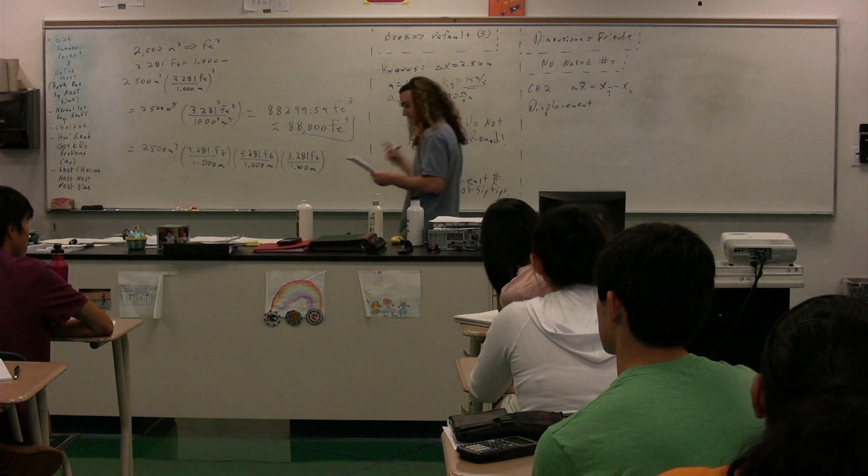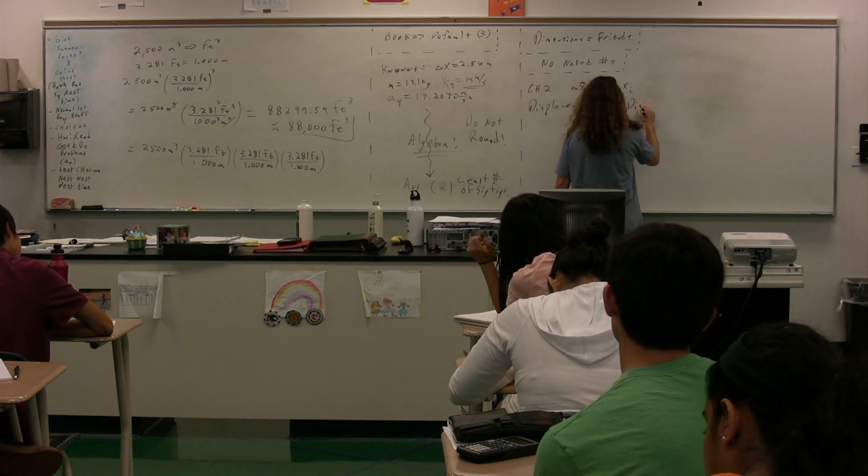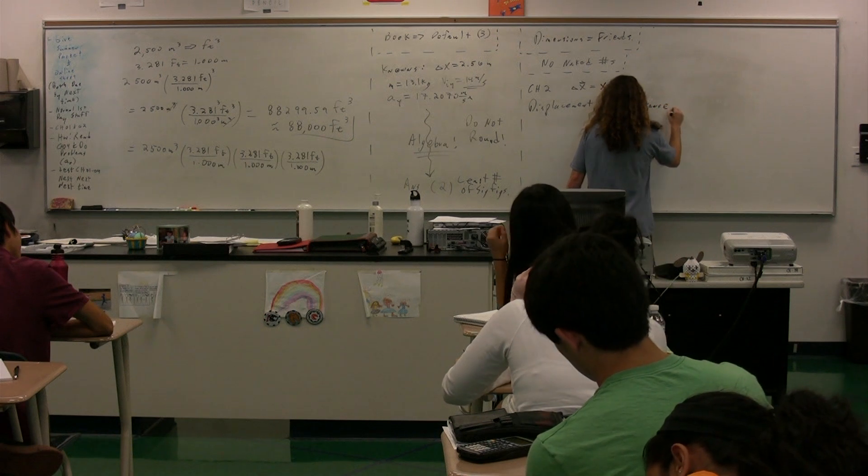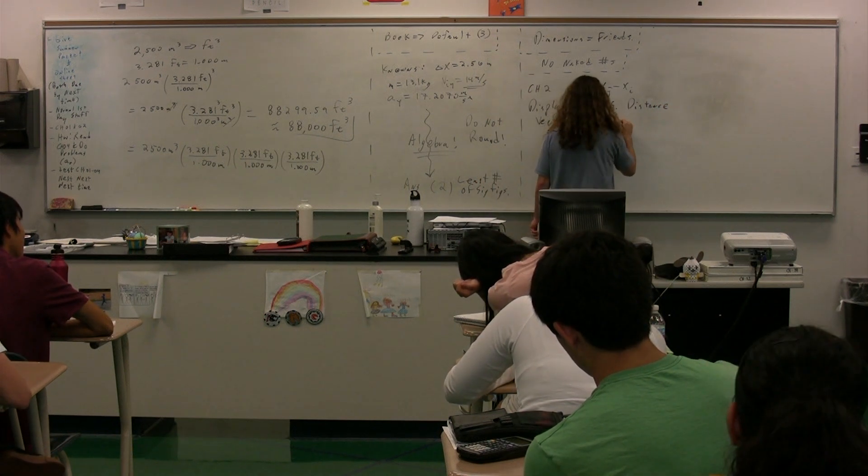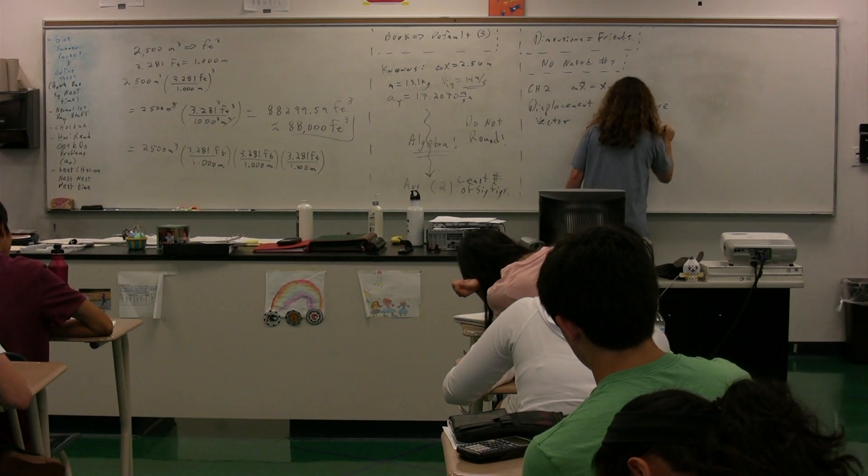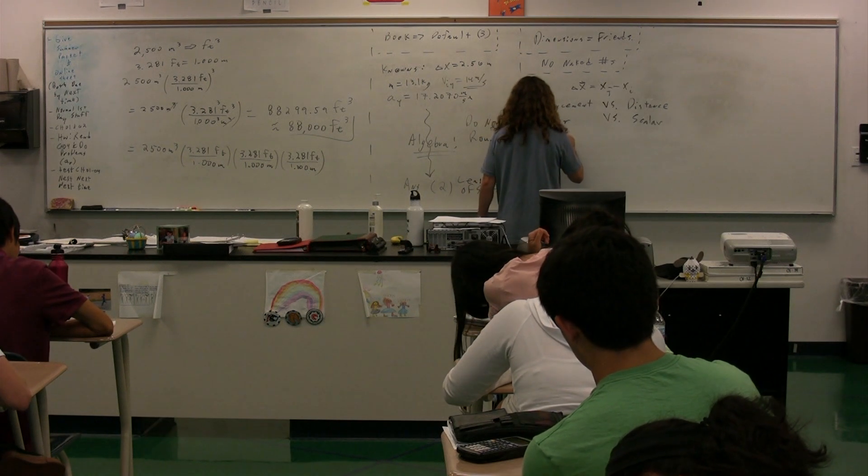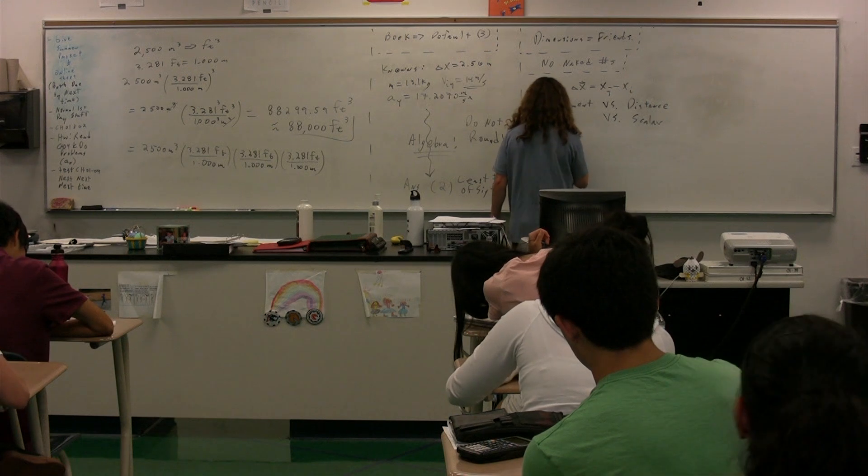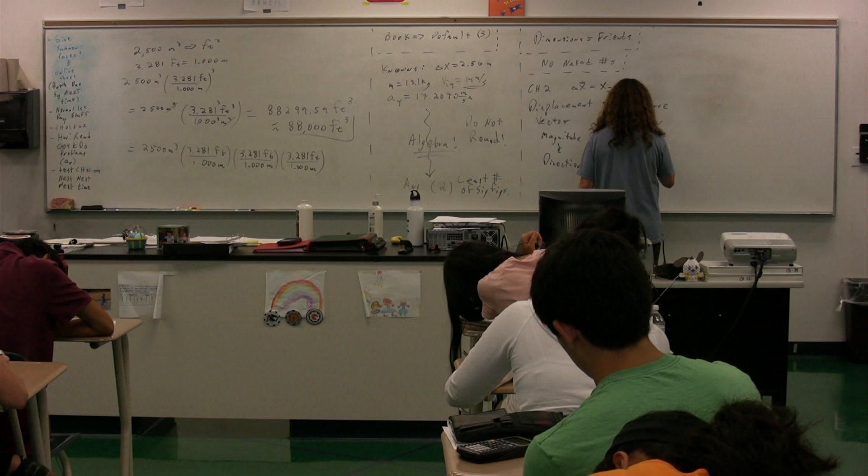That it's a vector. And a vector has both? Minji. Right, right, right. Nice. So we have the concept of displacement versus distance. We have vector versus scalar. Now, a vector has both magnitude and direction, whereas a scalar has magnitude.